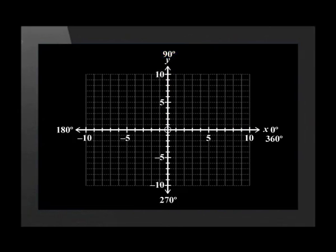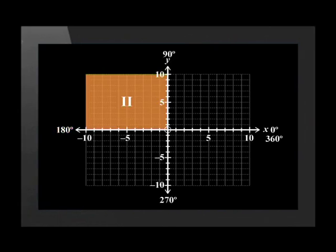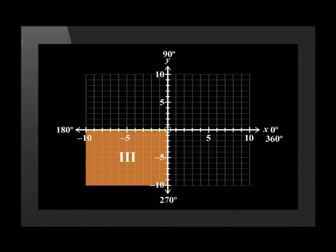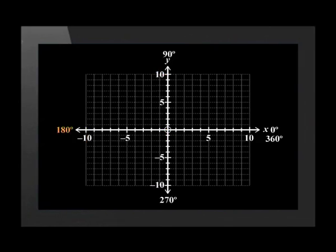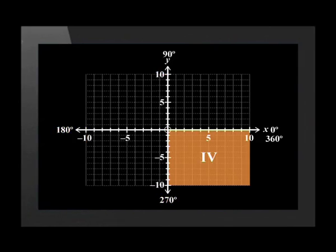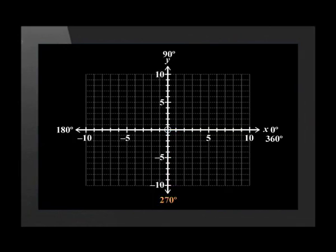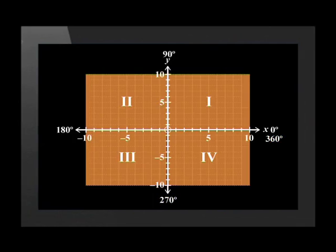Continuing in an anti-clockwise direction, we come to 180 degrees on the negative side of the x-axis. The quarter between 90 and 180 degrees is called the second quadrant. The third quadrant falls between 180 degrees and 270 degrees, and the fourth quadrant is between 270 degrees and 360 degrees. All of the quadrants are labelled using Roman numerals.